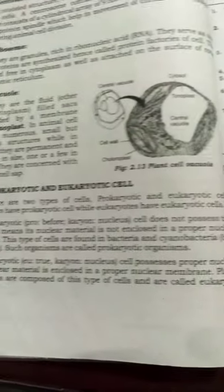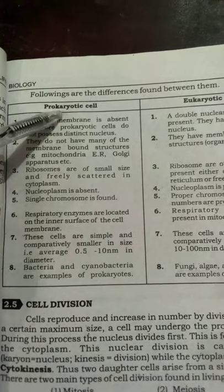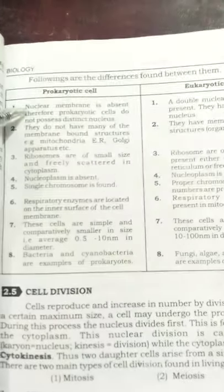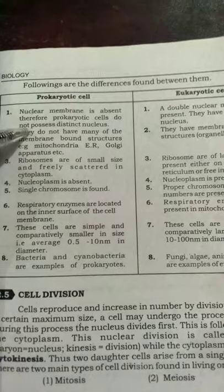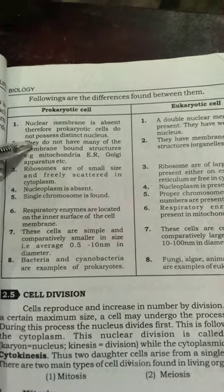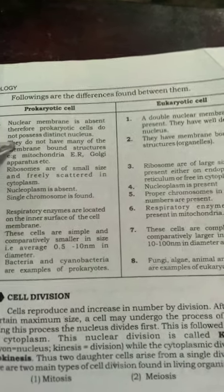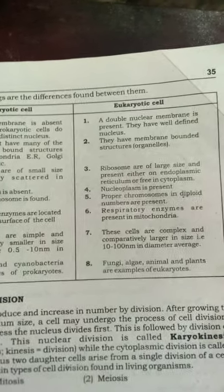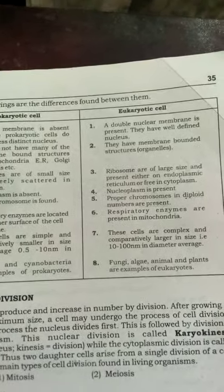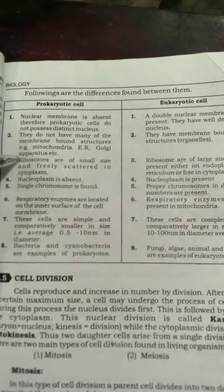Now let us come to the differences between prokaryotic and eukaryotic cells. Difference number one — nuclear membrane: nuclear membrane is absent in prokaryotic cells, therefore prokaryotic cells do not possess a distinct nucleus. In eukaryotic cells, a double nuclear membrane is present enclosing the nucleus.